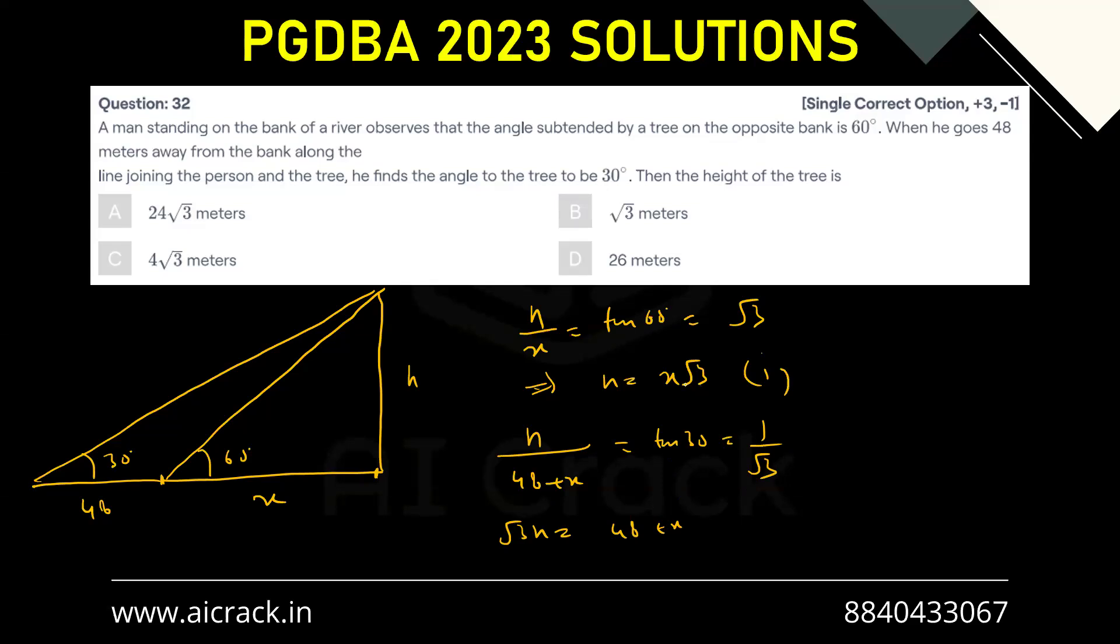Now we know that h equals to x root 3. We can use that over here. This will give us 3h equals to 48 plus x, sorry, 3x. This will give us x equals to 24.